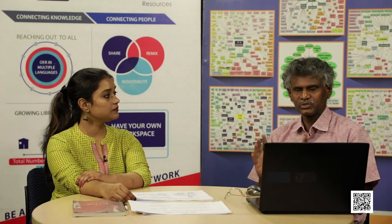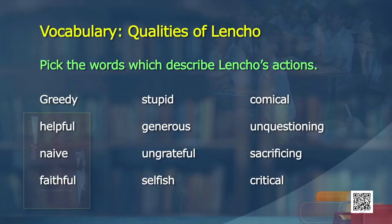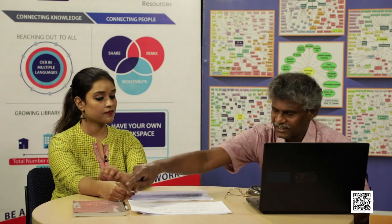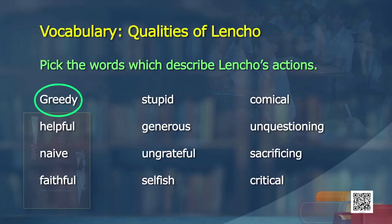Let us do some vocabulary activities. What kind of man is Lencho? Here are some words to describe his actions, behaviors, and qualities. Was he greedy? He lost everything, so you could consider it. Was he helpful? Yes, to his family. Was he naive? Yes — he had blind faith in God and thought God would send him exactly what he asked for. Was he faithful? Definitely yes. Was he stupid? That depends on perspective — it was his faith.